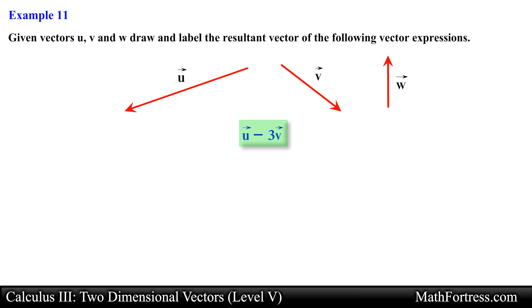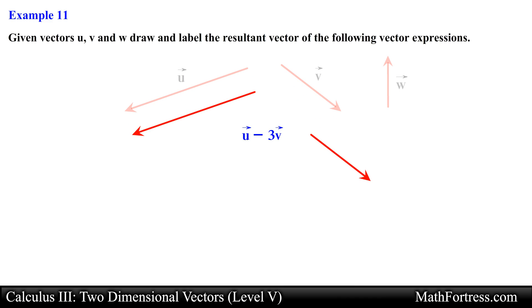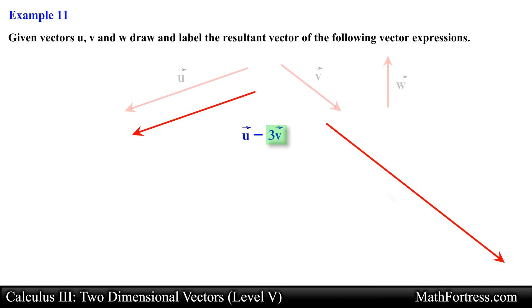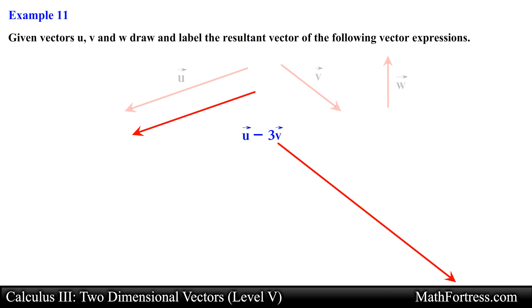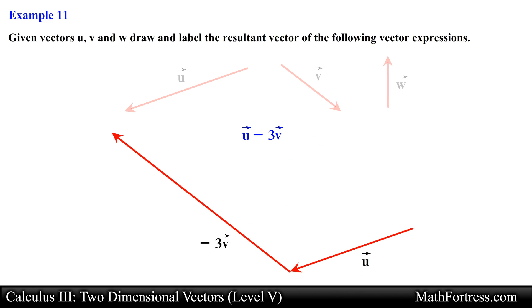Here we are asked to find the difference between vector U and 3 times vector V. Similar to vector addition we need to align the vectors using the triangle law. In this example we first scale vector V by a factor of 3. Then we align the tail of vector 3V with the head of vector U and flip vector 3V in the opposite direction. The resulting vector is drawn by connecting the initial point of vector U with the terminal point of vector 3V.